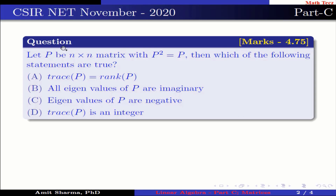The question is: let P be an n×n matrix with P² = P. Then which of the following statements are true? Option A: trace of P equals rank of P. Option B: all eigenvalues of P are imaginary.